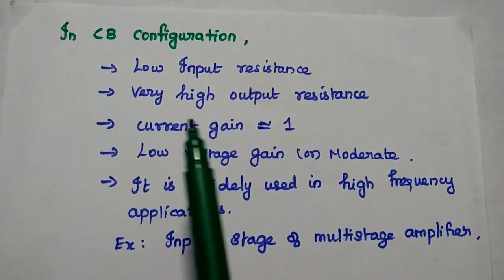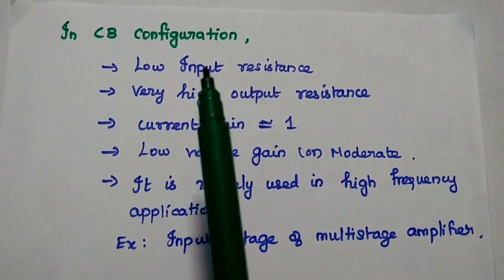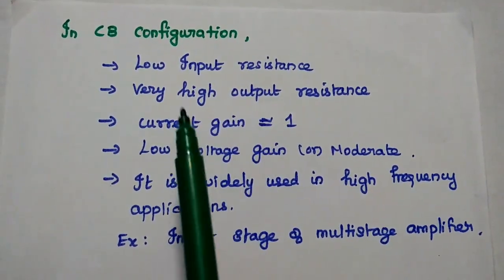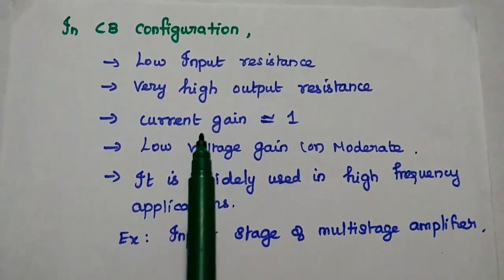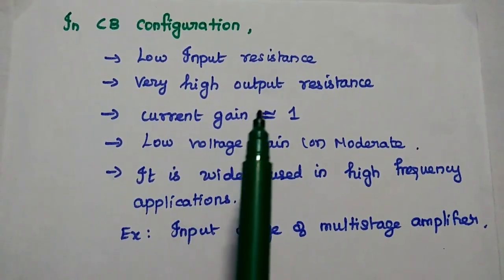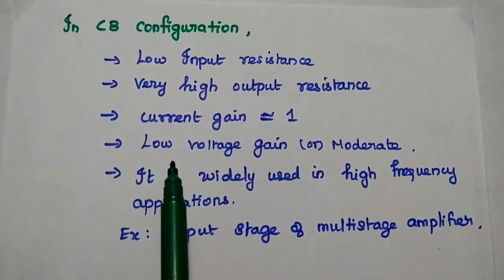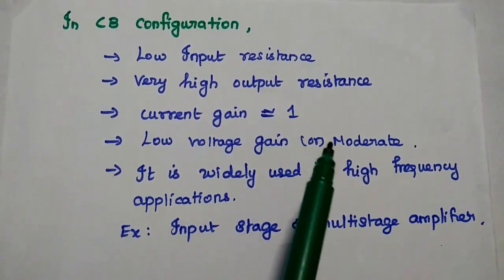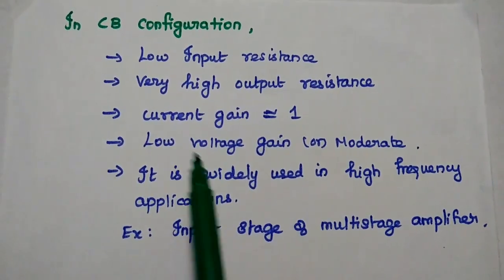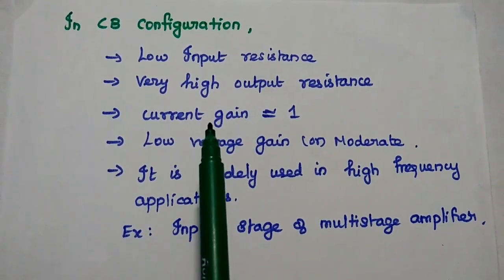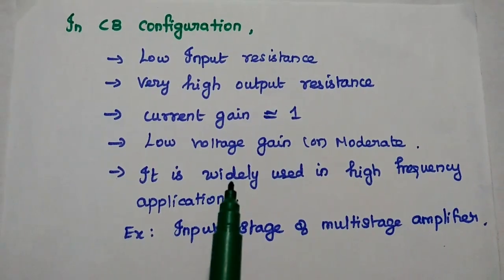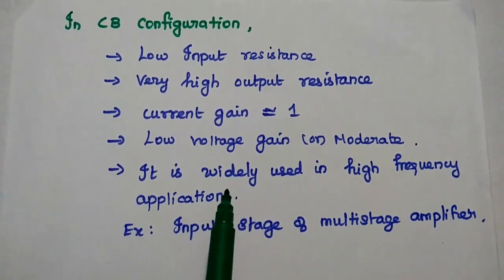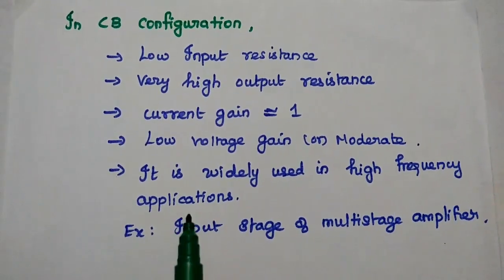The CB characteristics are: it has low input resistance, very high output resistance, current gain of almost 1, and low reverse voltage gain with moderate voltage gain. Due to these characteristics, CB configuration is widely used in high-frequency applications, for example as the input stage of a multi-stage amplifier.